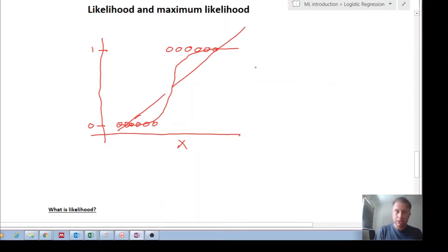And so we saw that we can use a probability function called the sigmoid, which looks something like this: 1 over 1 plus e to the minus beta zero plus beta one x.